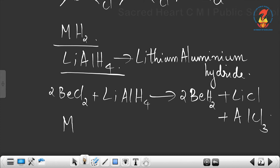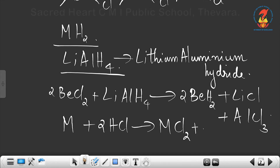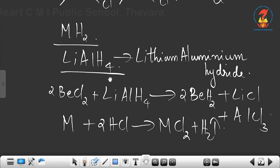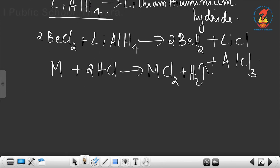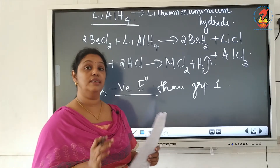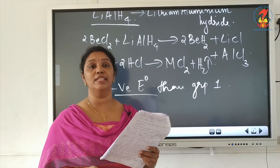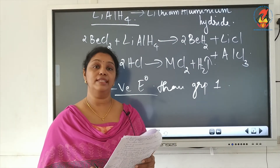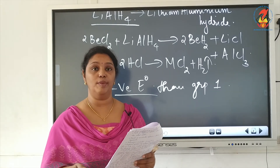Group 2 elements react with acids liberating hydrogen: M + 2HCl → MCl₂ + H₂, where M is any group 2 element. Group 2 elements also have a negative standard electrode potential (E°) value, but less negative than group 1. This negative E° value shows that group 2 elements are good reducing agents, meaning they can get easily oxidized by losing electrons.